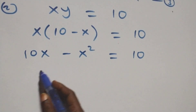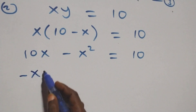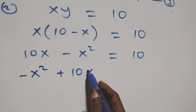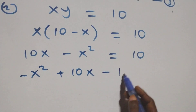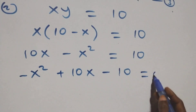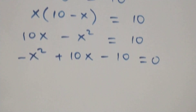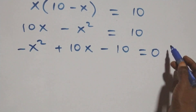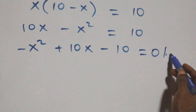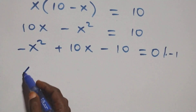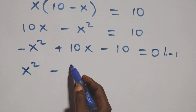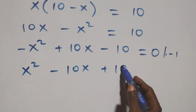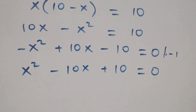We rearrange: minus x squared plus ten x minus ten equals to zero. We multiply through by minus one, and it becomes x squared minus ten x plus ten equals to zero.